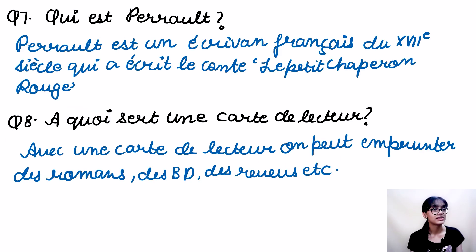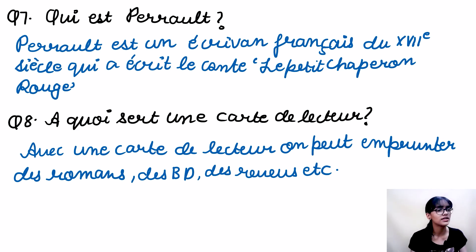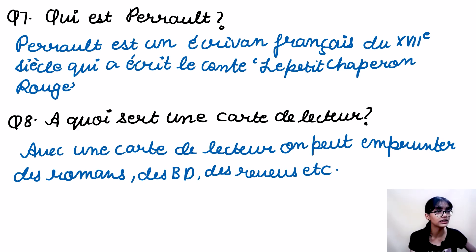The seventh question comes from page 39 — from the questions section itself, where you have to rearrange a sentence or something similar. It's the first question on page 39, where they talk about Perrault and his book. A question can be framed as: Qui est Perrault? Perrault est un écrivain français du XVIIe siècle qui a écrit le conte Le Petit Chaperon Rouge. This much will do.